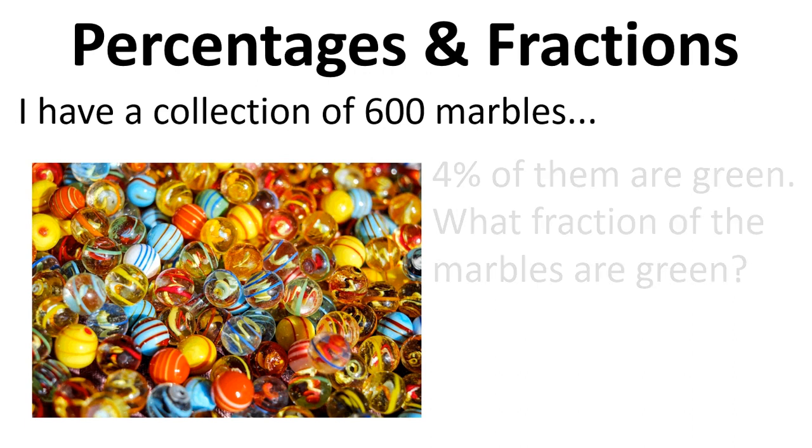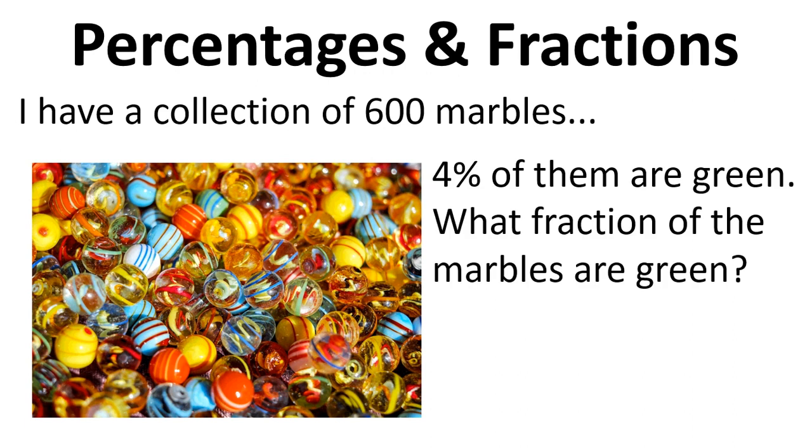So in the marble example, four percent of them are green. What fraction of the marbles are green? So we have four percent divided by a hundred percent. The percentages cancel out, so it's four over a hundred. We can simplify that to one in twenty-five.